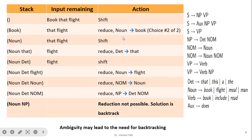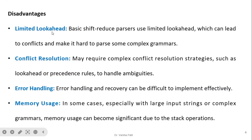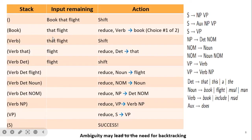Now consider 'book that flight' where 'book' is treated as a Noun instead of a Verb. If we proceed with this assumption, we will find that we cannot achieve a reduction to the start symbol S. At that point, backtracking is required. If the parser had a limited look-ahead facility, it could make the correct decision at the right point and avoid backtracking. This ambiguity arises because 'book' can act as either a noun or a verb.